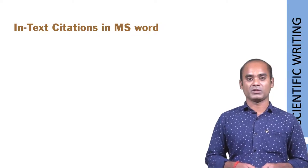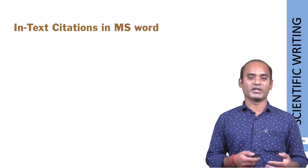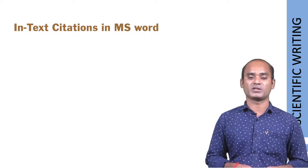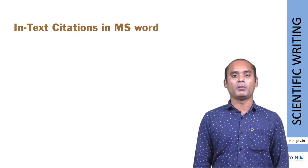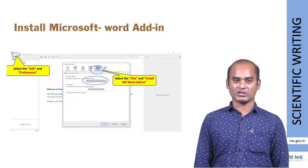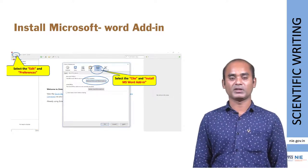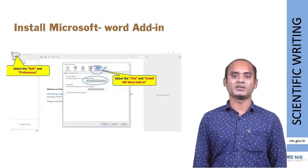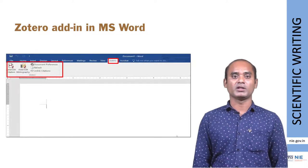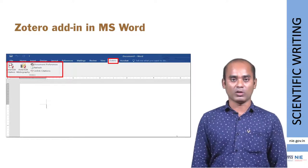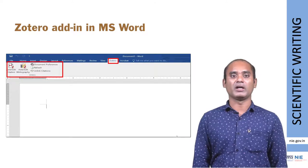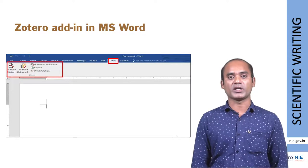Now the interesting part: we know the basic functions, how to create a library, and how to input data in Zotero. Now we will see how to do in-text citations in MS Word. First, we need to add the Word add-in. Go to Edit, select Preferences, a box will appear — select Cite and install MS Office Word add-in. Once installed, open MS Office Word and you can see the Zotero tab. Under it are functions: Add/Edit Citation, Add/Edit Bibliography, Document Preferences, Refresh, and Unlink Citations.